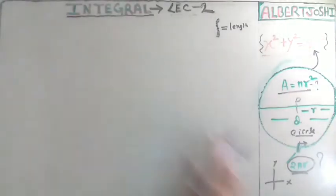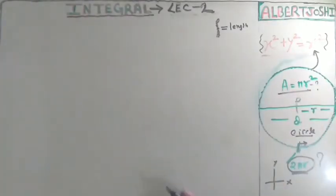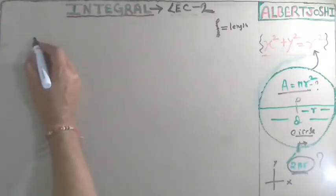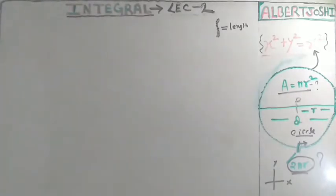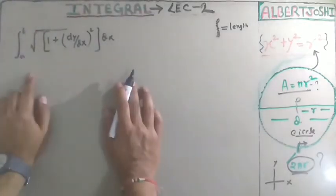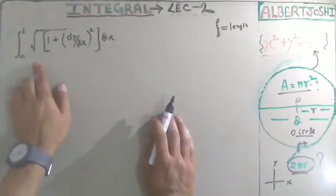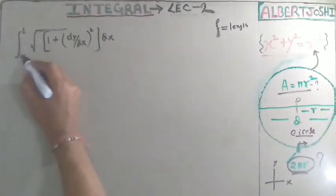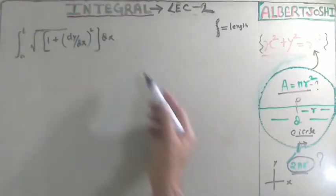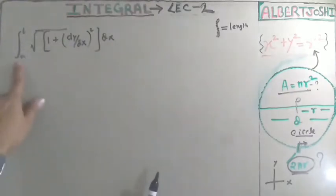I will explain where 2πr comes from — it means counting the total number of points. To find any length using integration, you use the arc length formula: the integral from a to b of √(1 + (dy/dx)²) dx. Here y is the function, so we will use the circle equation.